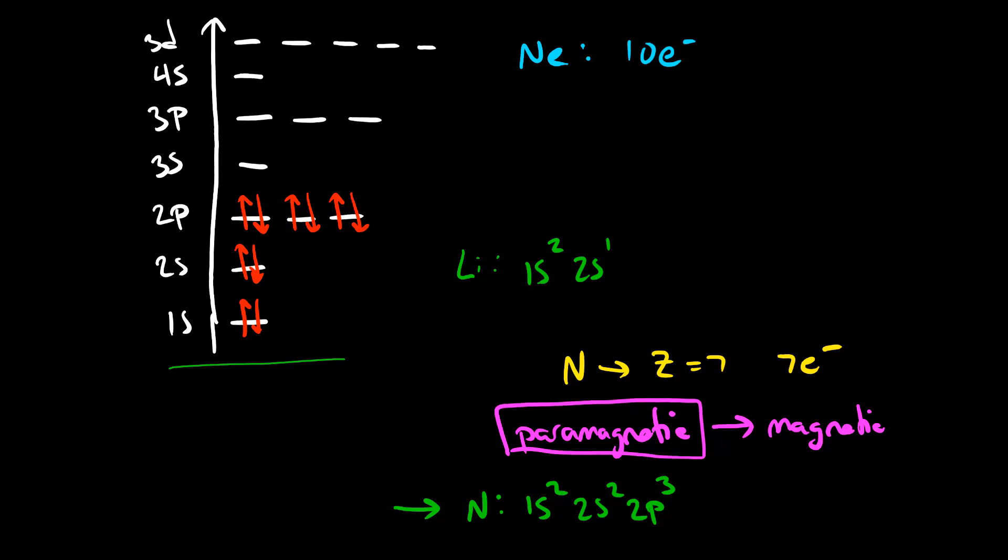The electron configuration for neon is 1s2, 2s2, 2p6. Since neon has all its electrons paired up, this makes it diamagnetic. A diamagnetic element is one that has no unpaired electrons. All the electrons are spin paired, and this is a spin pair.